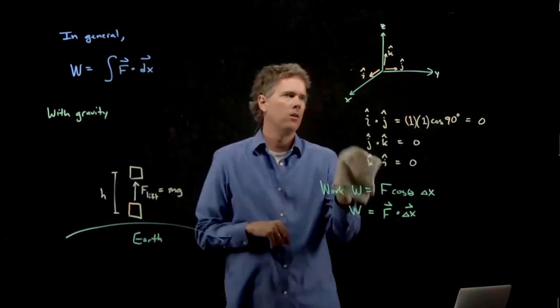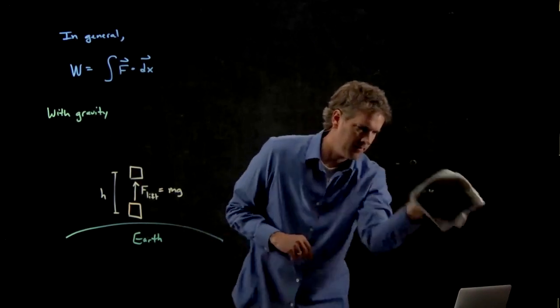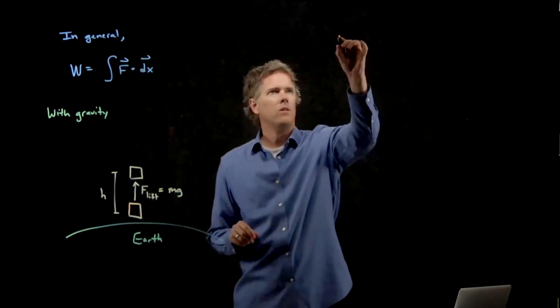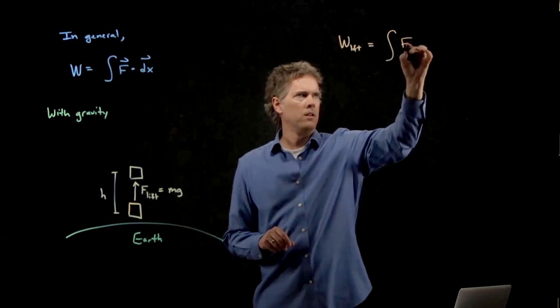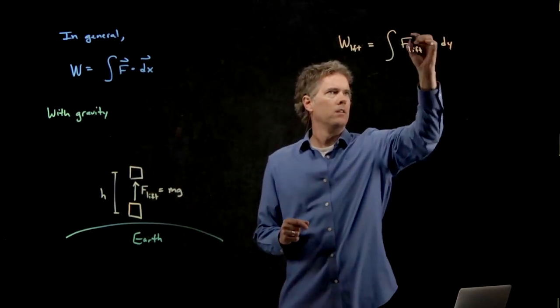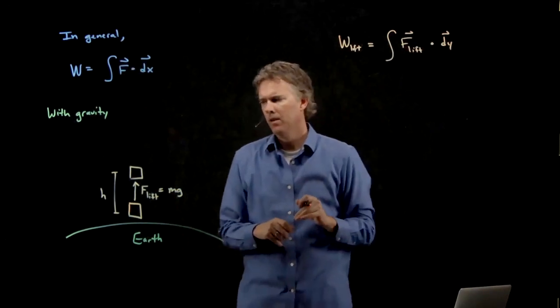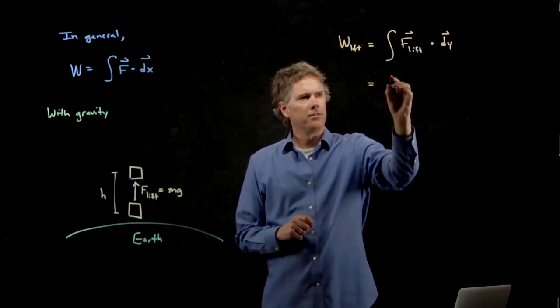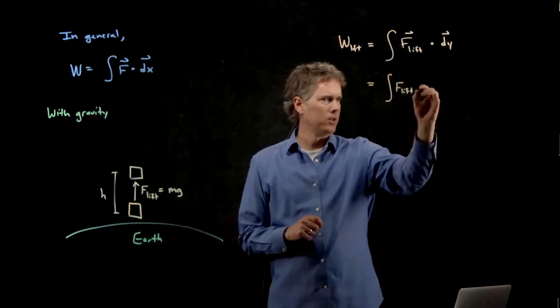Let's calculate the work now by this definition. The work due to lifting it is going to be the integral of F_lift dotted with, why don't we call it y, since we're going vertically. Okay, so we just rewrote this definition right here. But we know what F_lift is equal to. F_lift is just going to be a magnitude of mg. But let's figure out what the angle is to put right here.